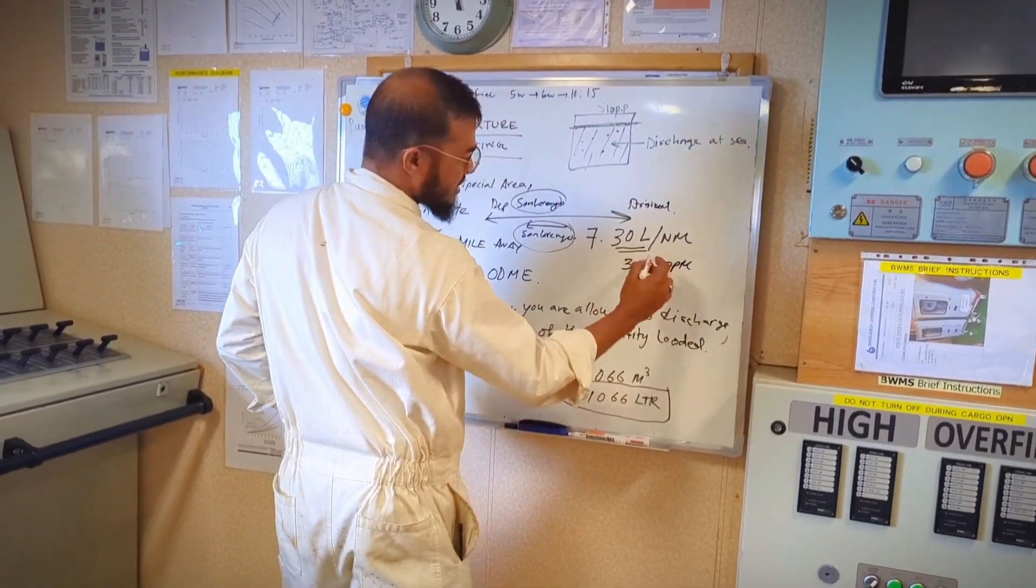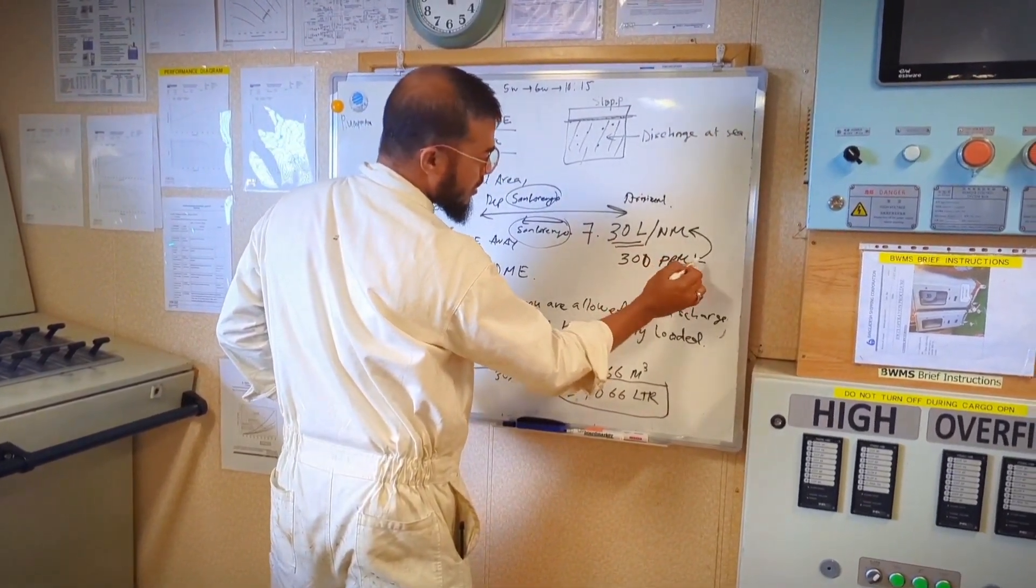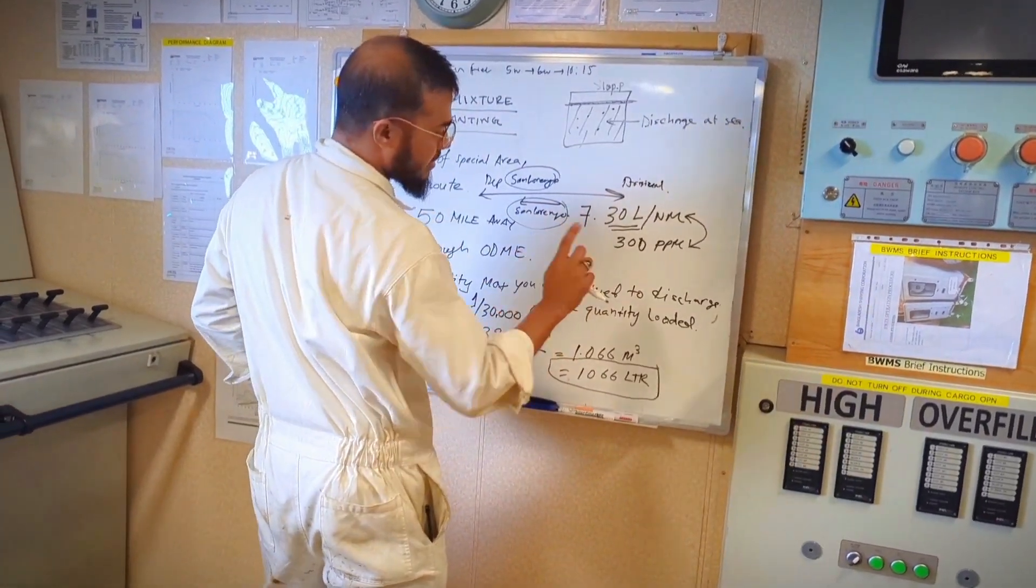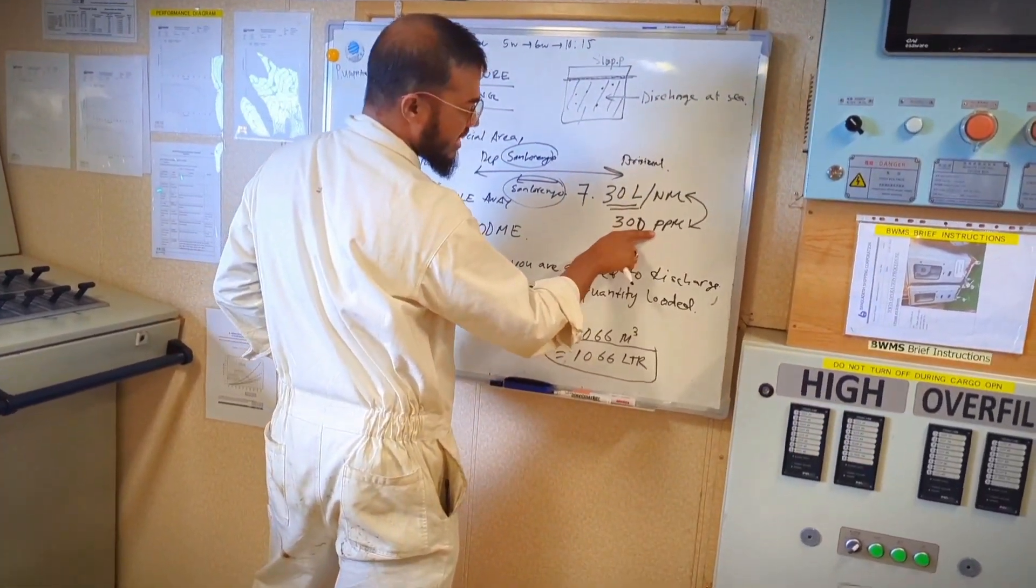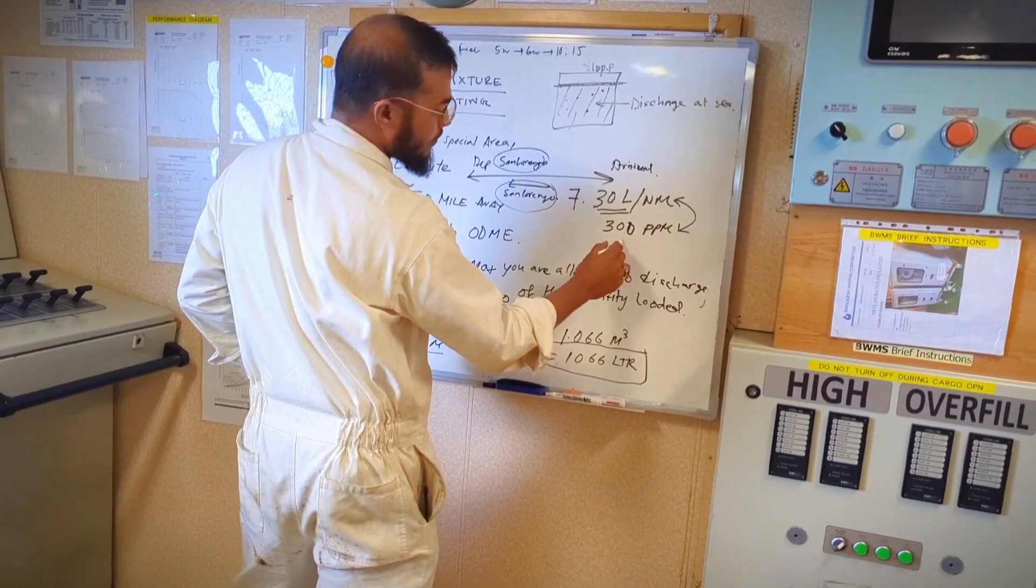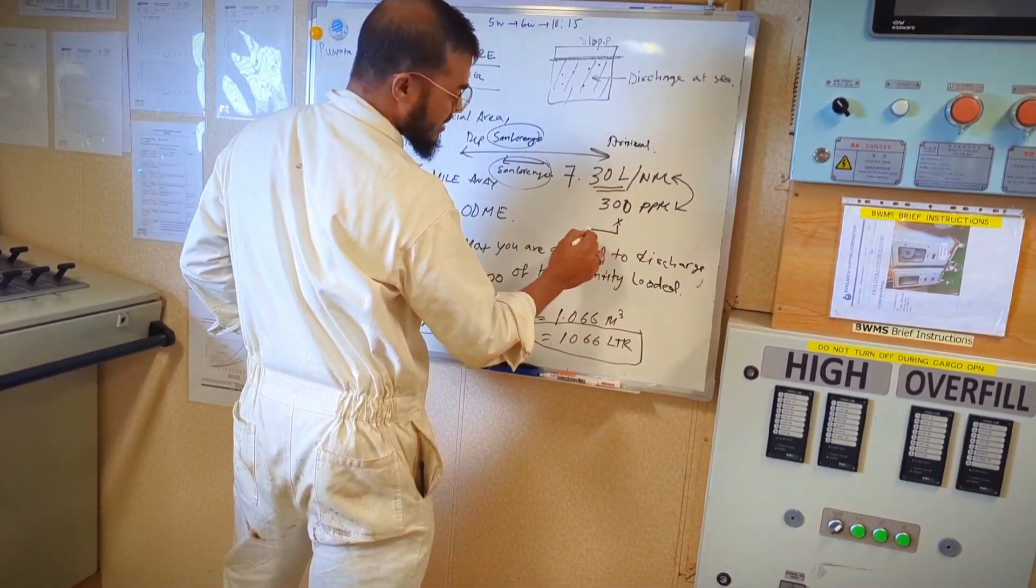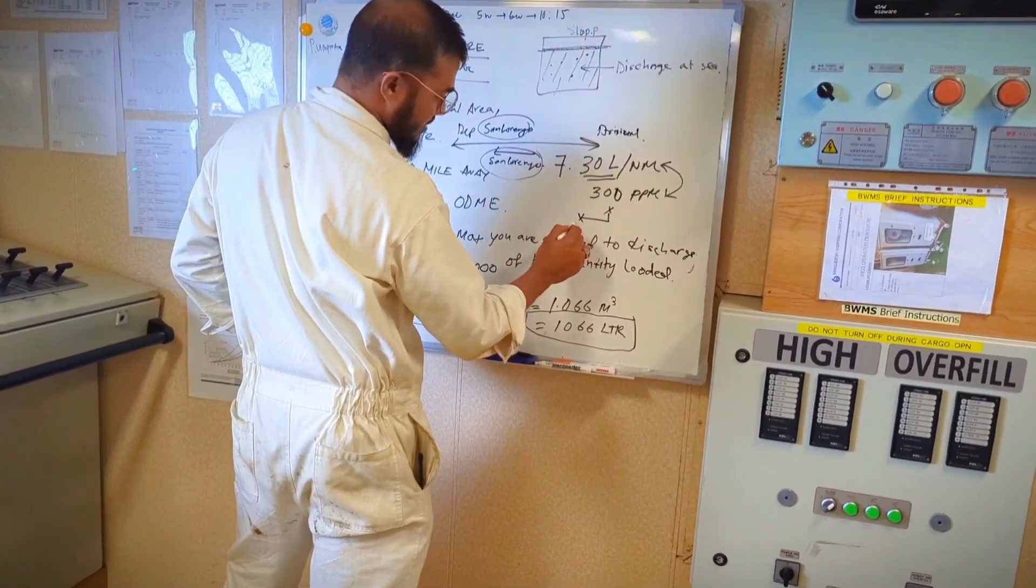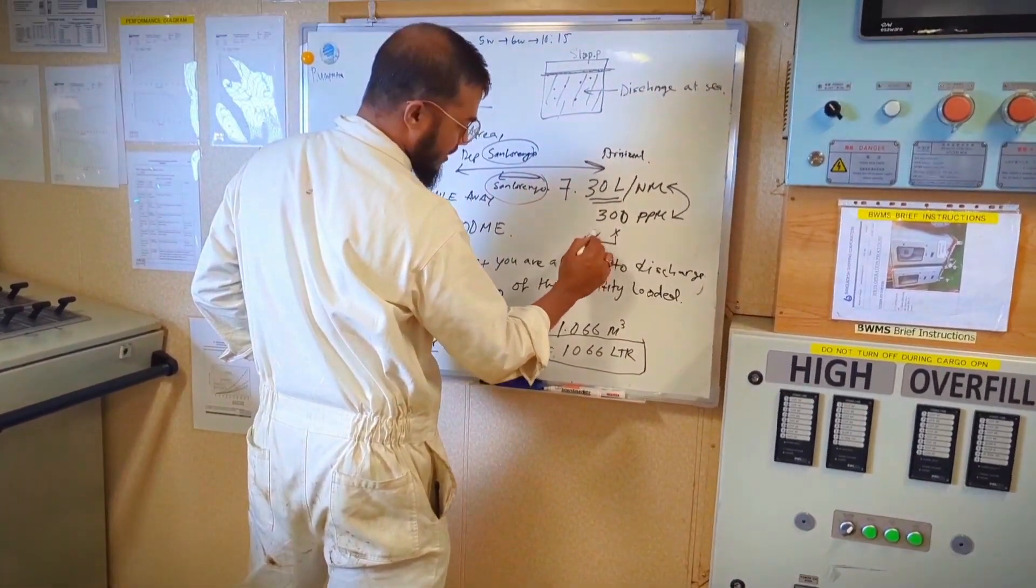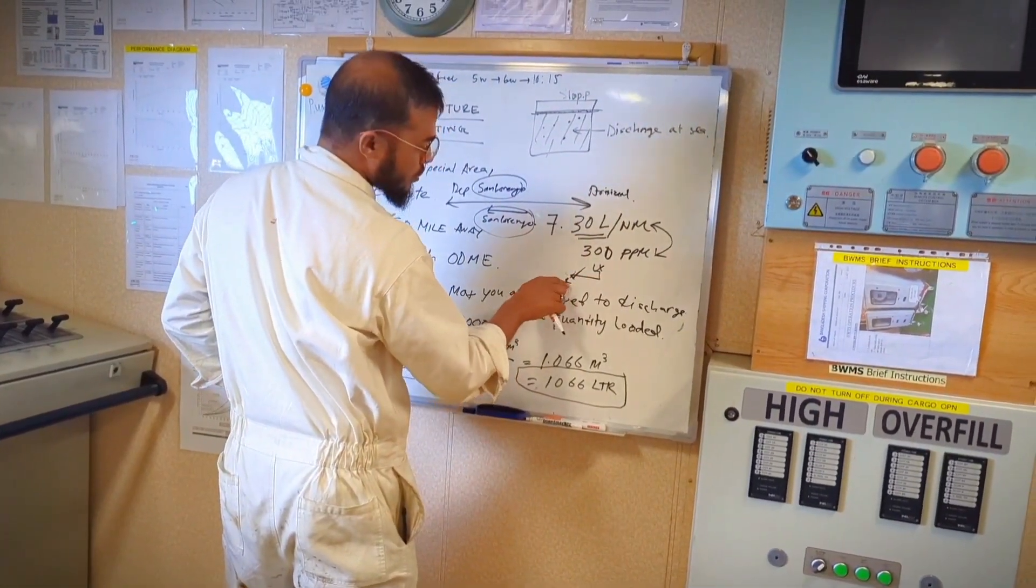So there is a relation between these two. So we have limits here when it reaches 300 PPM, the overboard valve becomes short and the recirculation valve becomes open - it comes back to slop again.